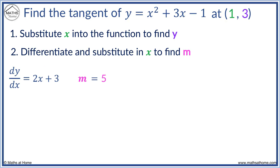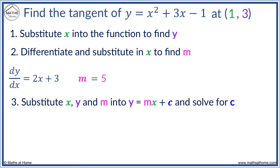Now we substitute x, y and m into the straight line equation y equals mx plus c to find c. y equals 3, m equals 5, x equals 1. 5 times 1 equals 5 and we subtract 5 from 3 to get c equals minus 2.